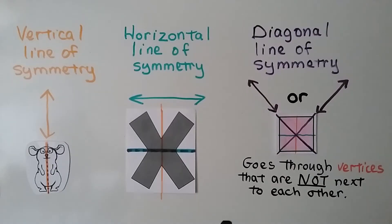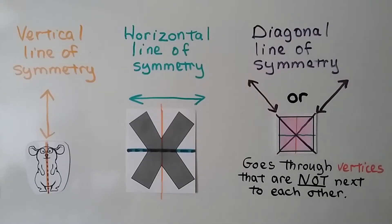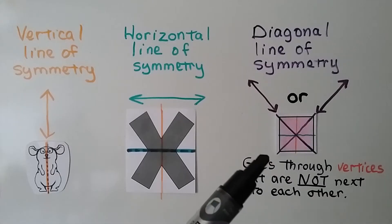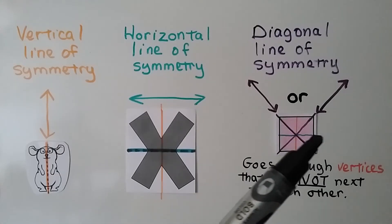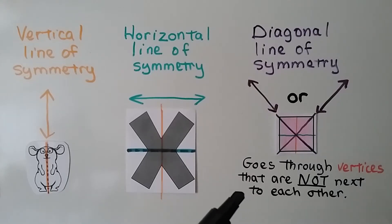For diagonal lines of symmetry, a shape can have several. This square has two diagonal lines of symmetry, as well as a vertical one and a horizontal one. The diagonal lines of symmetry go through the vertices that are not next to each other.